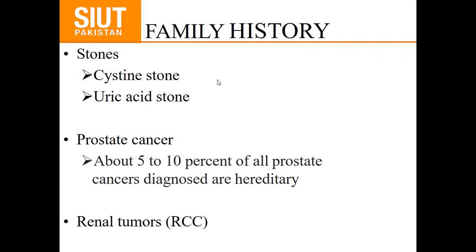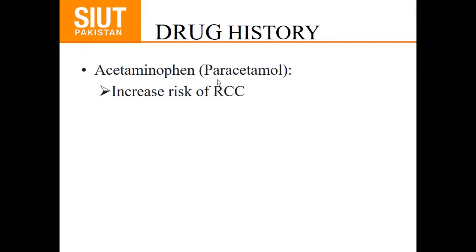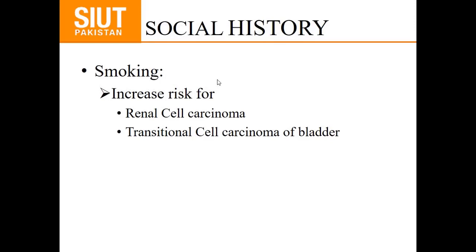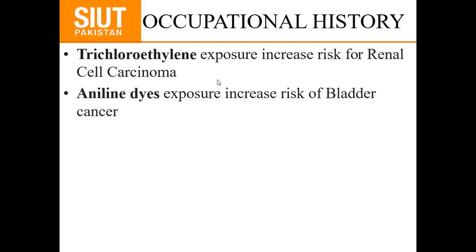For family history, ask about stones — cystine and uric acid stones are common in families. Prostate cancer: about 5–10% of all prostate cancers have a history in siblings or parents. Renal cell carcinoma is also hereditary. Regarding drug history, chronic use of paracetamol or acetaminophen increases the risk of RCC. Social history: smoking is a very important cause of renal cell carcinoma and transitional cell carcinoma of the bladder. Occupational history: exposure to trichloroethylene increases risk of RCC, and exposure to aniline dye increases risk of bladder cancer.